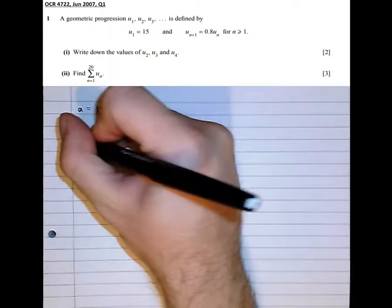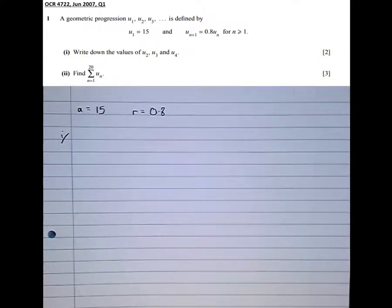So now let's look at what the question's actually asking us. It says write down the values of u2, u3, and u4. Well, we've got u1 equals 15.